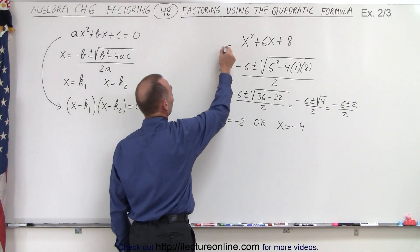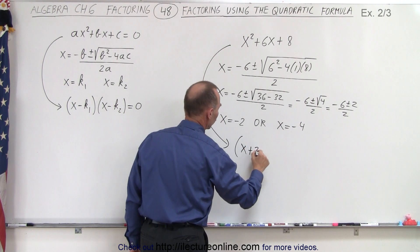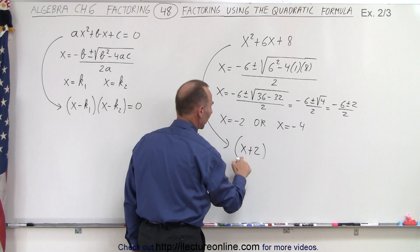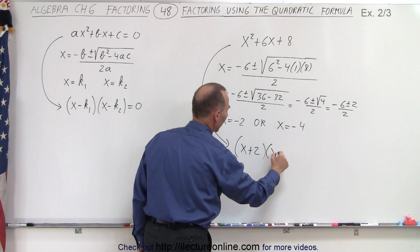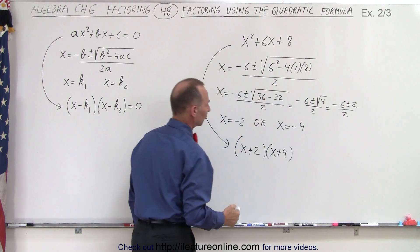That means that we can now write this in factored form, the quantity x plus 2, remember it's the opposite in sign, x plus 2 times x plus 4, and so that would be the factored form of our original quadratic formula.